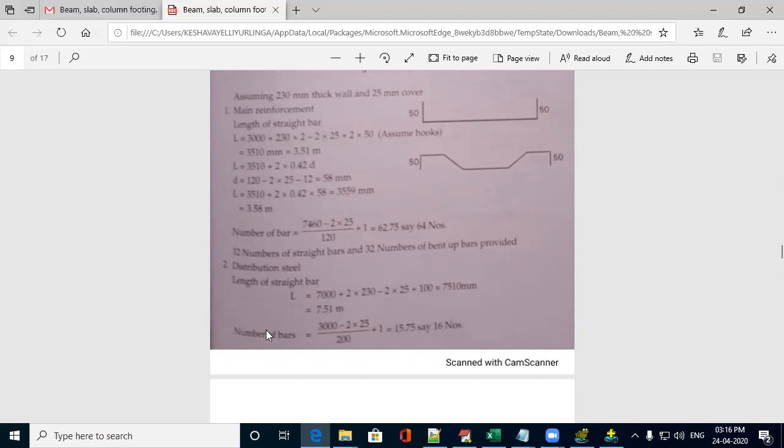To find, and you have to remember, there is no cranking of distribution bar, so no need of calculating length of, there will be no calculation of length of cranked bars for the distribution steel. Since in the question, there is no cranking. Number of bars will be,